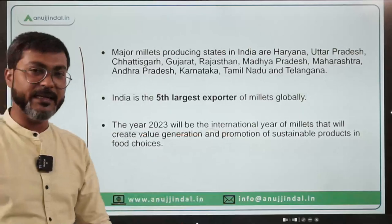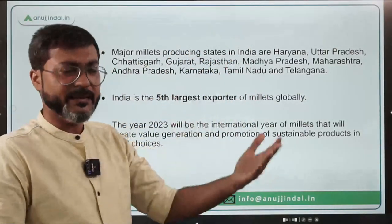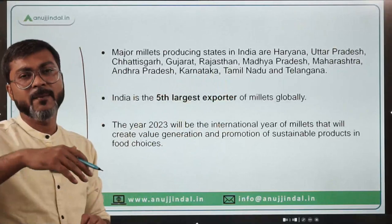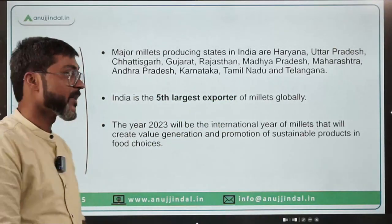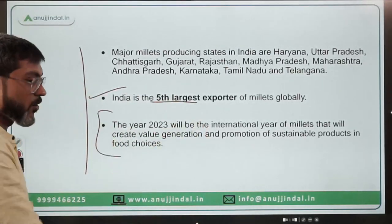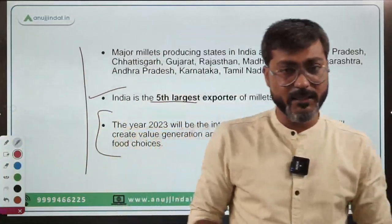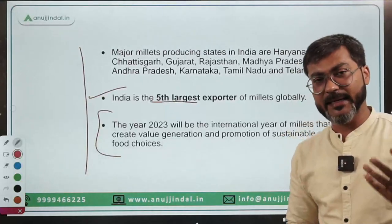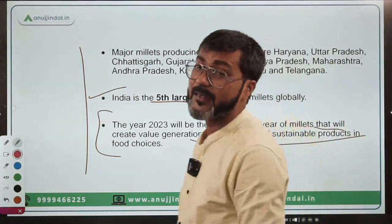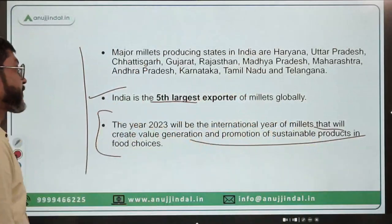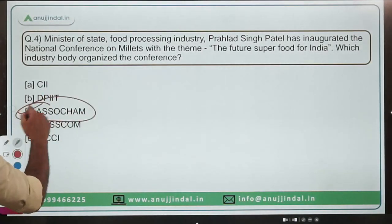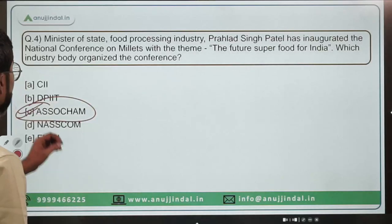The major millet-producing states in India include Haryana, Uttar Pradesh, Gujarat, Rajasthan, and Madhya Pradesh. India is the fifth largest exporter of millets globally — a very important fact. The year 2023 will be the International Year of Millets, announced by the United Nations on India's efforts. This year will create value generation and promotion of sustainable products in food choices with a focus on millets. The correct answer is option C — SOCHAM.